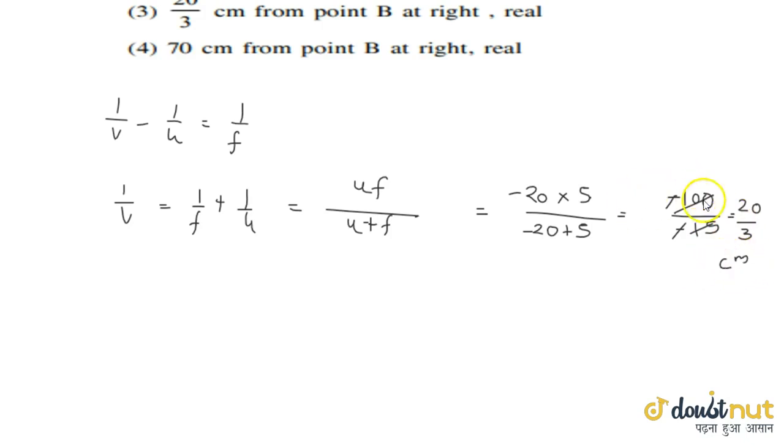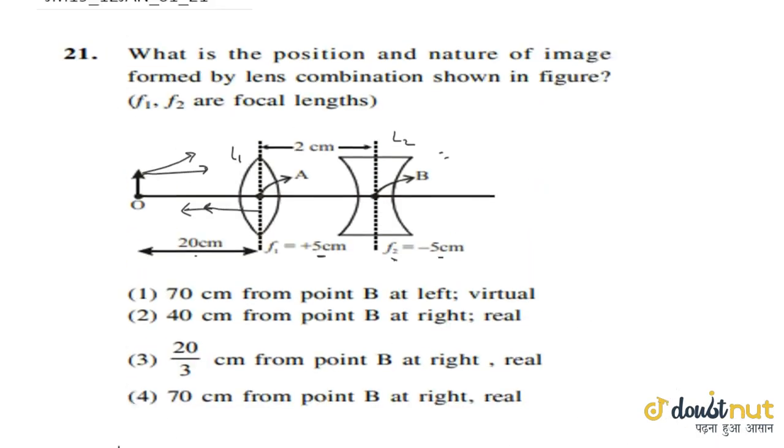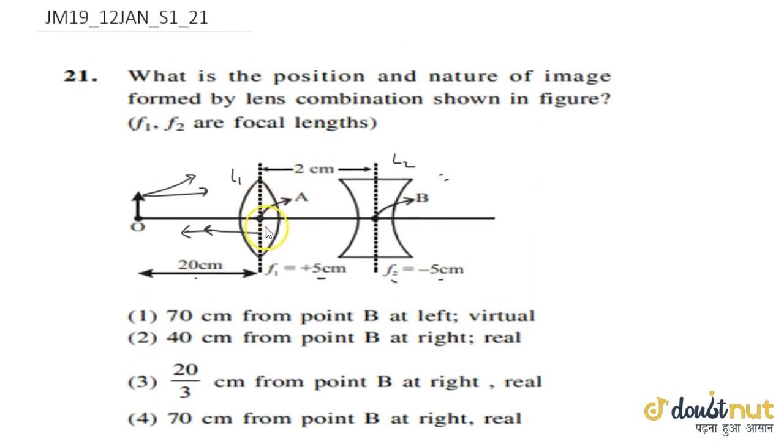So at 20 by 3 centimeter, the first image will form after lens 1. Now important thing is that 20 by 3 is positive. This means from the pole of lens 1, we have to go right.